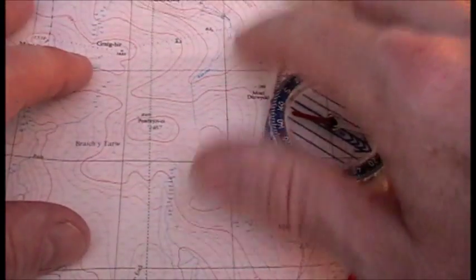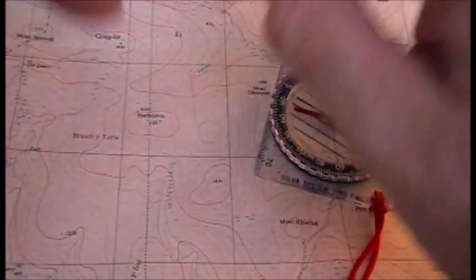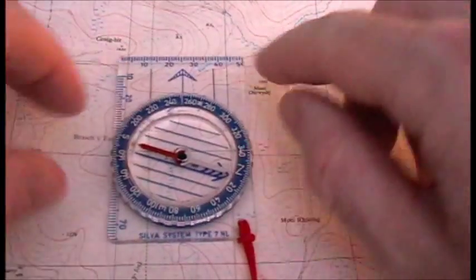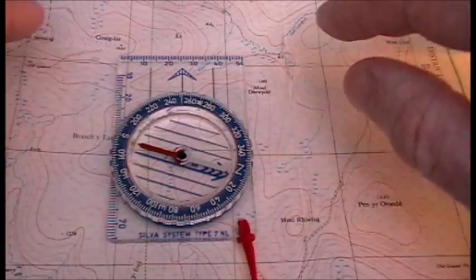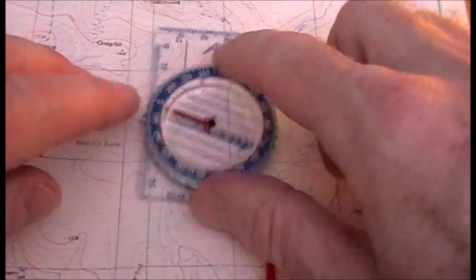The distance between the grid lines is always one kilometer on the ground. So it's another way in which you can measure distances, map distances, using the rule, the centimeter rule on a compass.